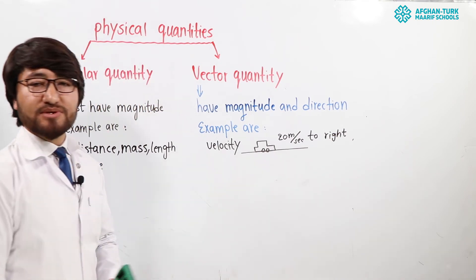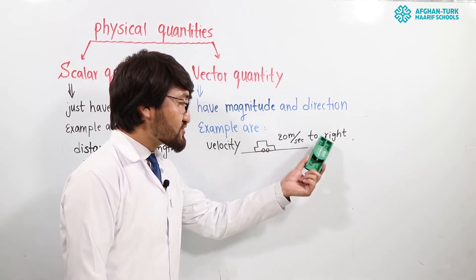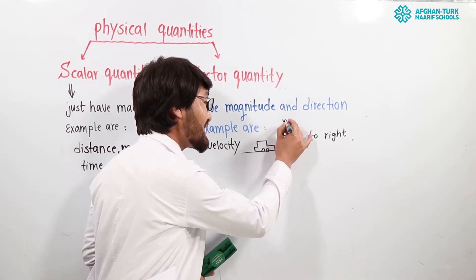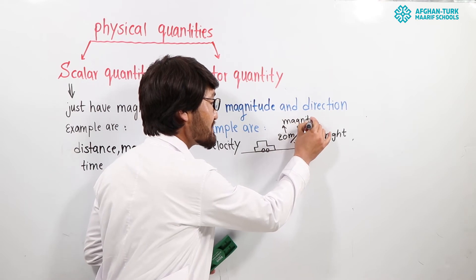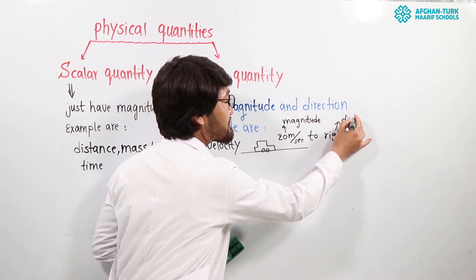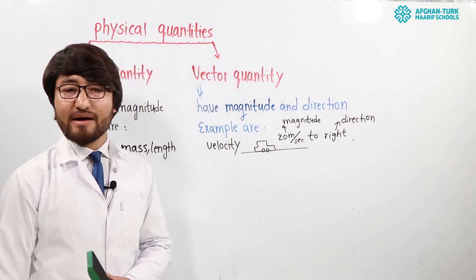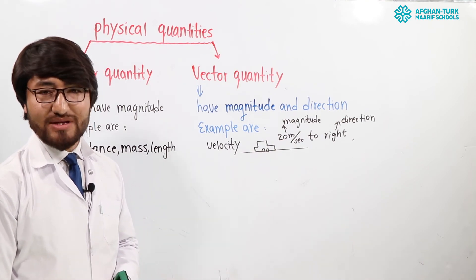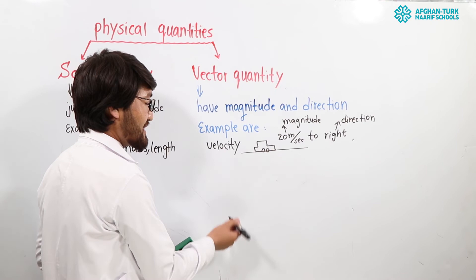The speed of this car is 20 meters per second — that is the magnitude. And 'to the right' is the direction. Because of that, we say that velocity is a vector quantity: it has both magnitude and direction.